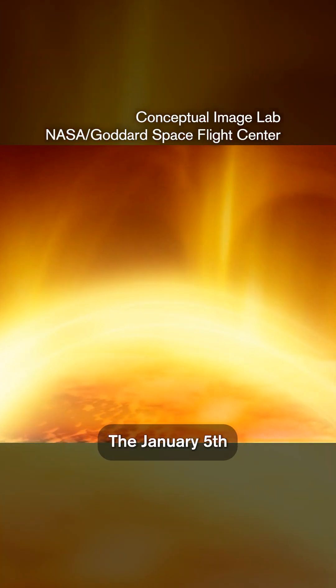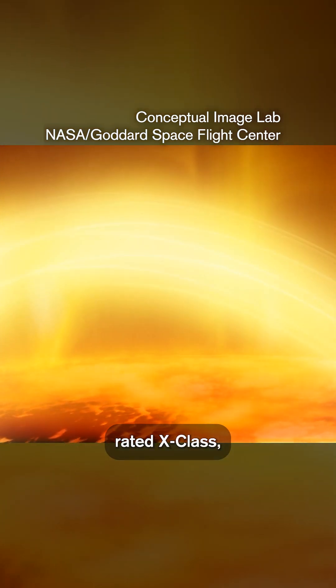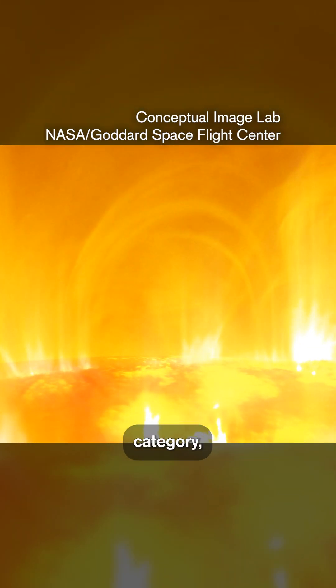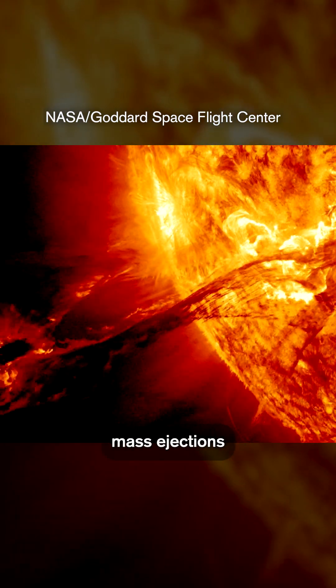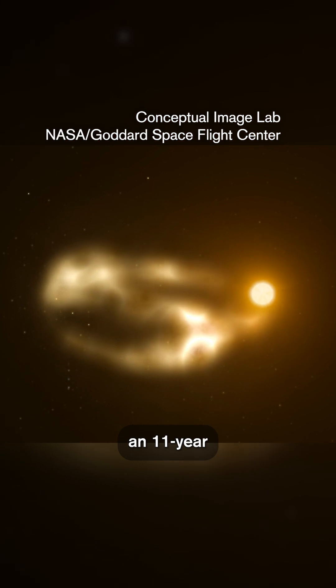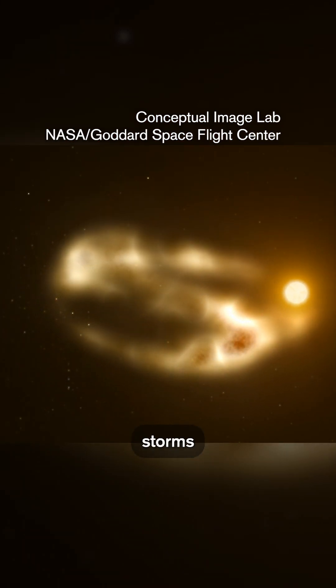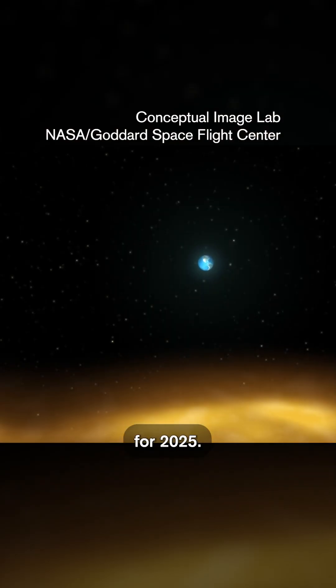The January 5th flare was rated X-class, the most powerful category, and might be a sign of what is to come. Solar flares and coronal mass ejections follow an 11-year cycle with the most intense storms forecasted for 2025.